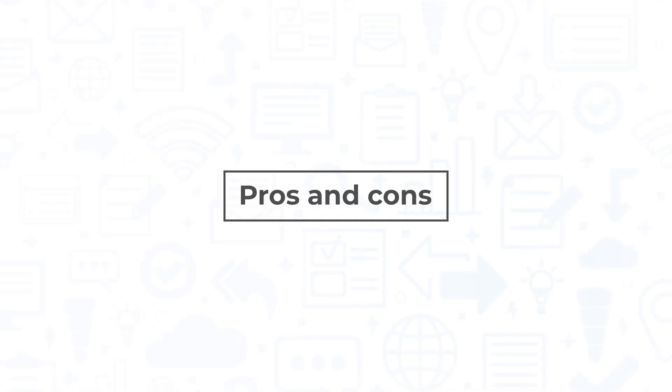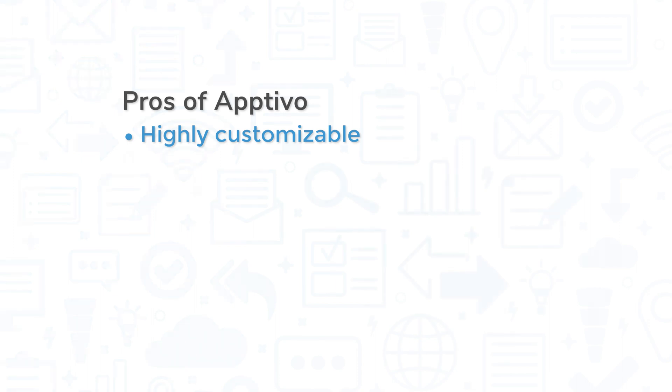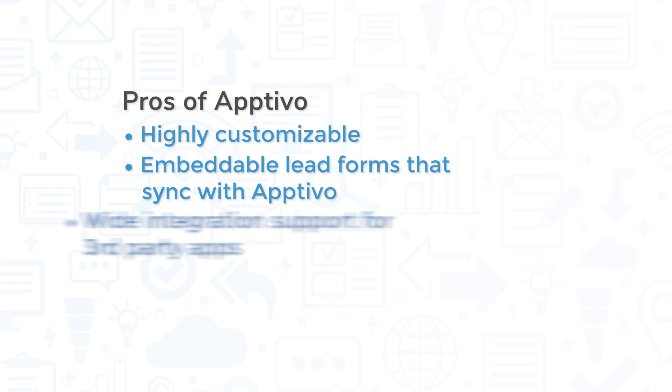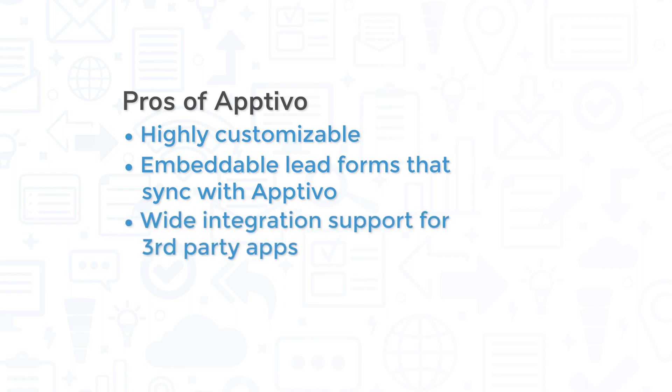Aptivo CRM is a top rated tool, but it still comes with its pros and cons. The biggest advantage of Aptivo CRM might be how customizable it is. You can change the system's navigation layout to suit your working style, and you can add a number of custom fields to record cards. The system also helps streamline lead management with embeddable lead forms for your website, and it supports integrations for a variety of third-party software systems.